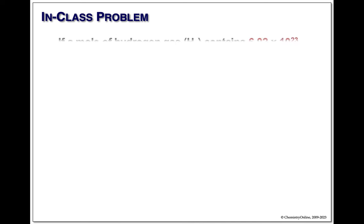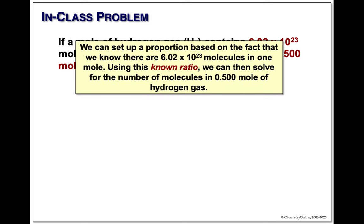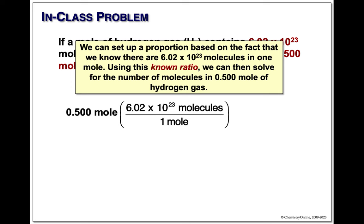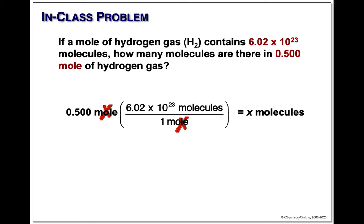Let's do something more chemistry. Hydrogen exists as H2 — diatomic. We have a mole of hydrogen containing 6 times 10 to the 23rd molecules. How many molecules in half a mole? Start with our given of 0.5 moles. Put our ratio in with mole in the denominator so moles cancel and we're left only with molecules. 0.5 multiplied by 6 times 10 to the 23rd equals 3.01 times 10 to the 23rd hydrogen molecules.